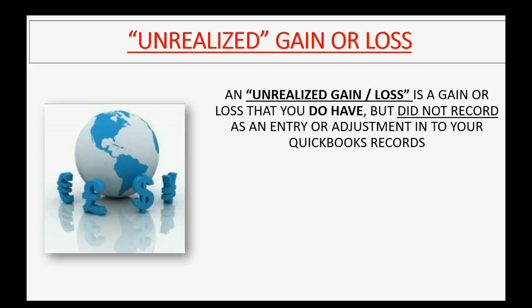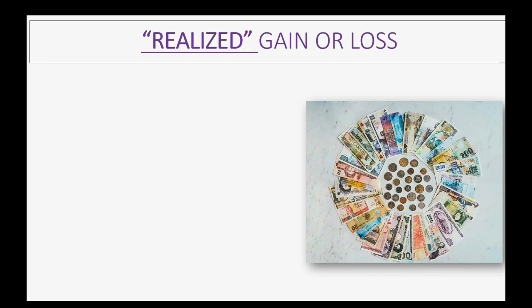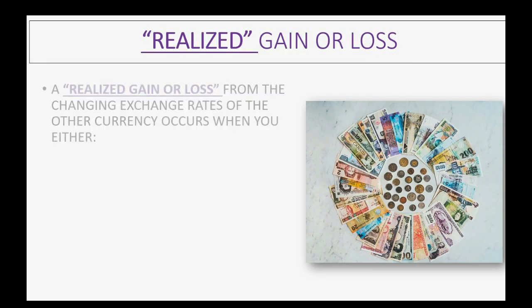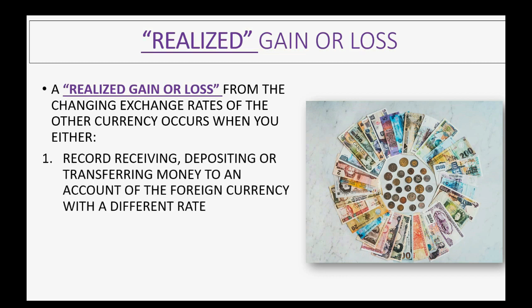An unrealized gain or loss is a gain or loss that you do have but did not record as an entry or adjustment into your QuickBooks records. A realized gain is a gain that you did record into your QuickBooks records. A realized gain or loss occurs from changing exchange rates of the other currency, and it occurs when you either record receiving, depositing, or transferring money to an account of the foreign currency.